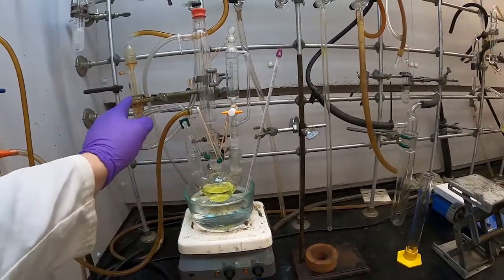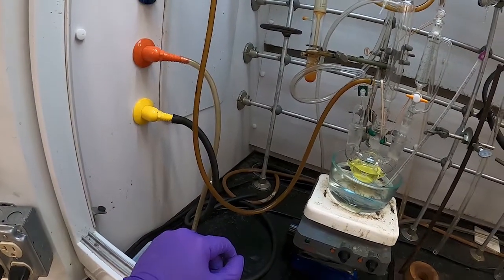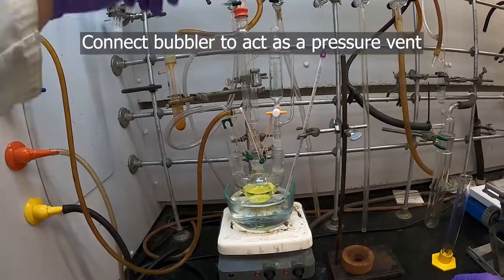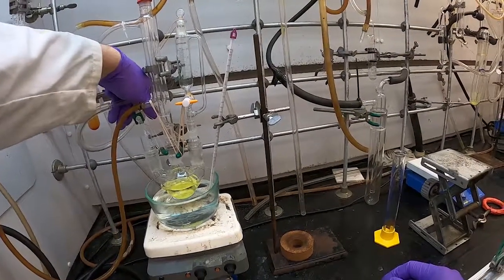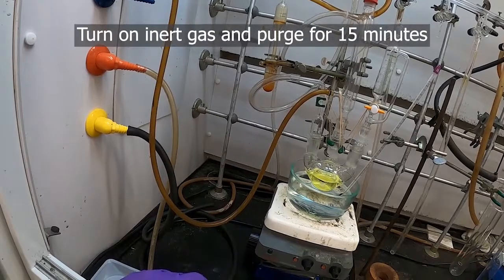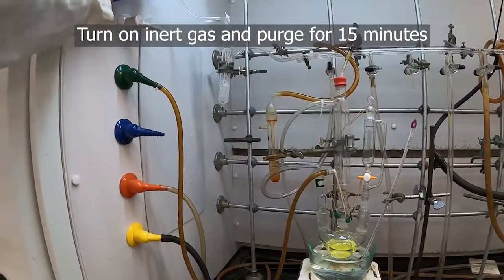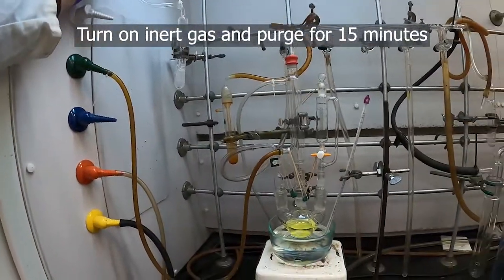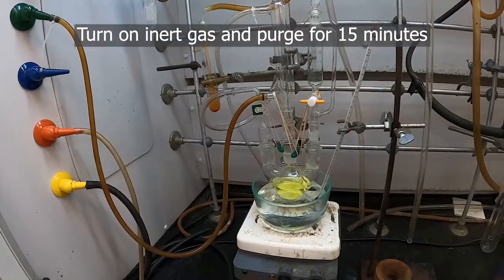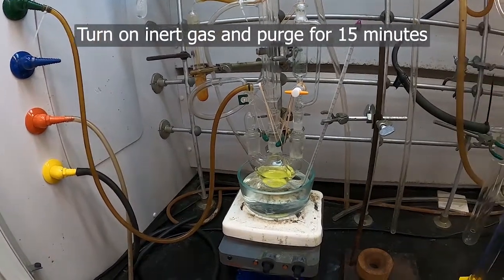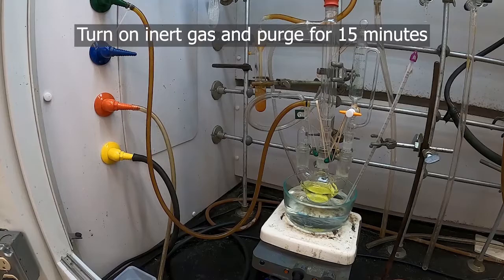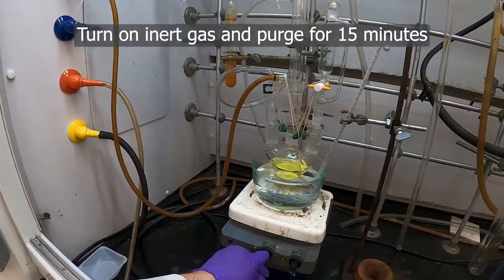So now that that's all set up we can begin our nitrogen. We'll take this needle and bubbler and insert that into the septum at the top of our condenser here. Make sure to open this key, and then turn on the nitrogen. We can start the flow a little bit. Now start our stirring.